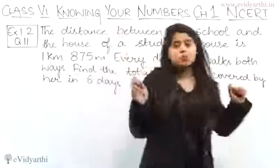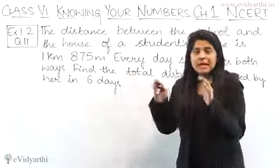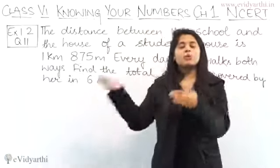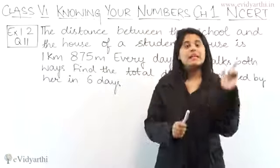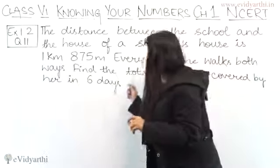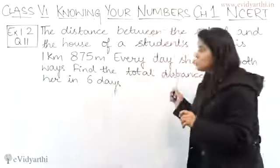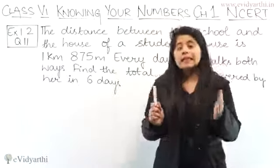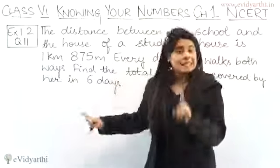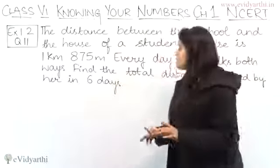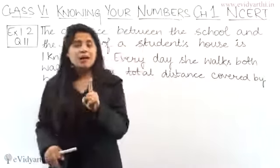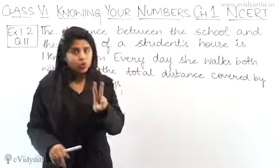Every day she walks both ways means she will go to school and then come back — so 1 day means 2 rounds. Now we have to find the total distance covered in 6 days. First of all, we take the 1-day distance: 1 day equals 2 rounds.